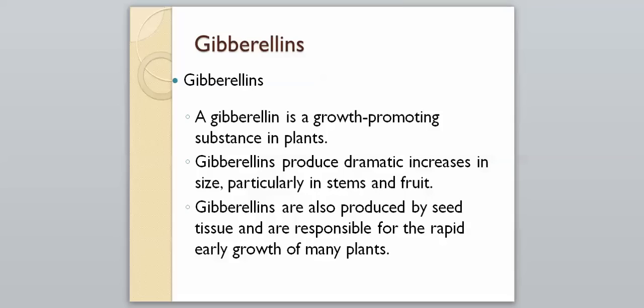Our second-to-last hormone type is gibberellins. These are growth-promoting substances in plants that produce dramatic increases in size, particularly in stems and fruit. They're also produced by seed tissue and are responsible for the rapid early growth of many plants.